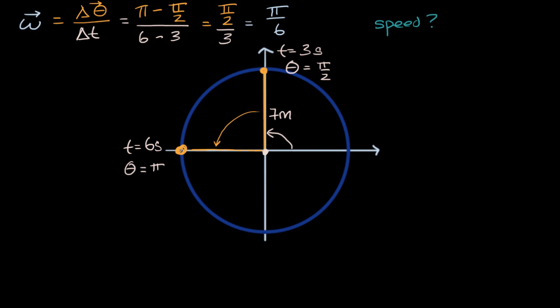And let's remind ourselves about the units. Our change in angle, that's going to be in radians. And then that is going to be per second. So we're going pi over six radians per second. And if you do that over three seconds, well then you're going to go pi over two radians.